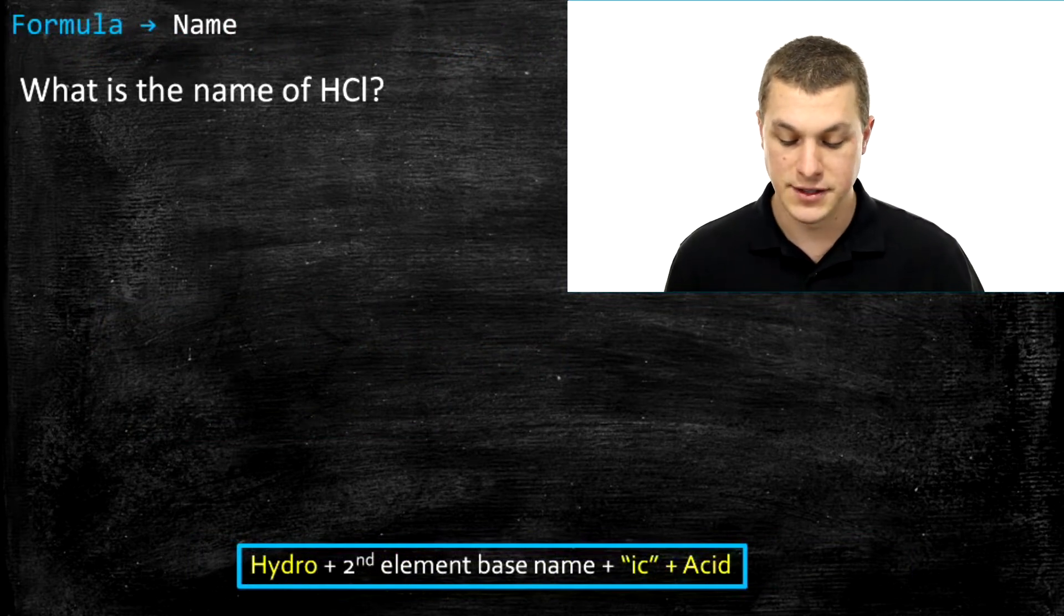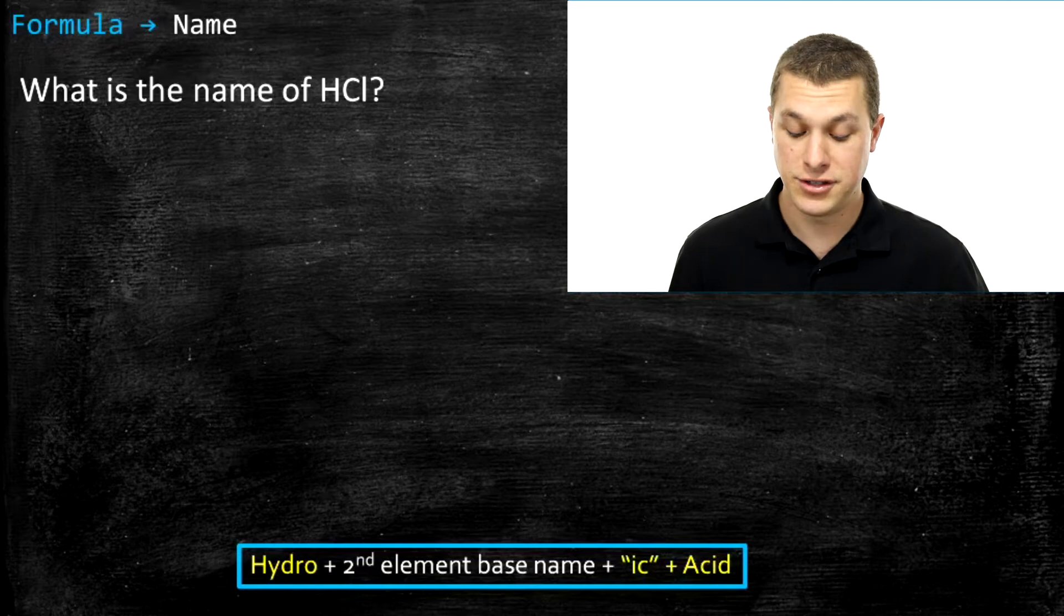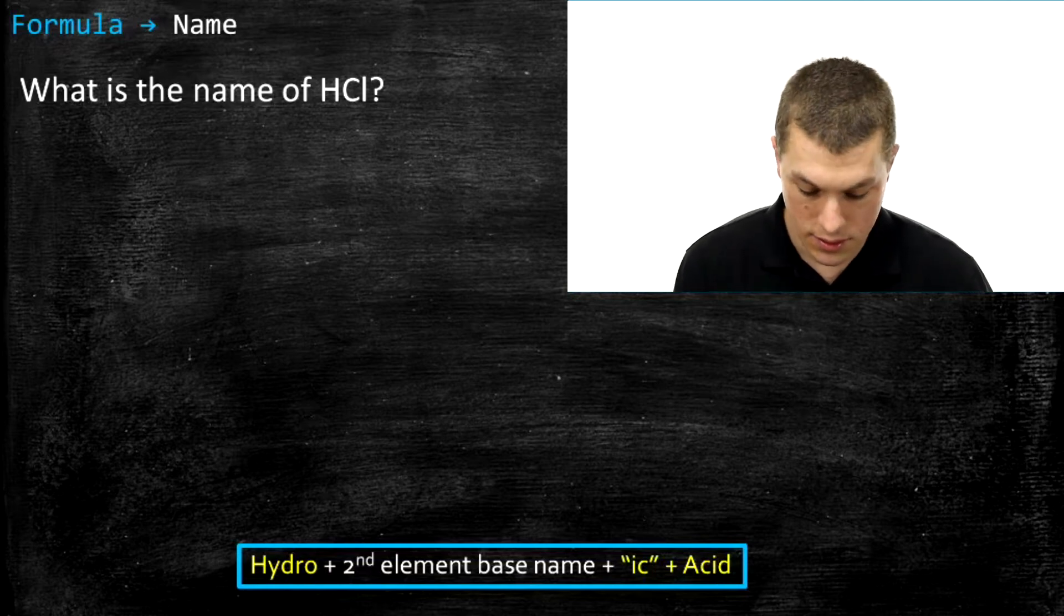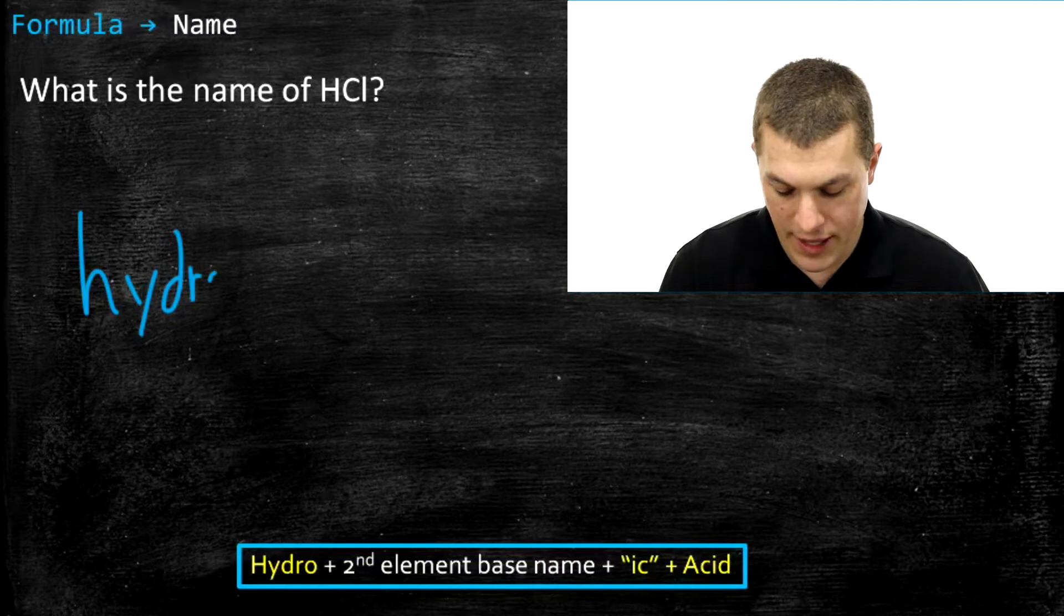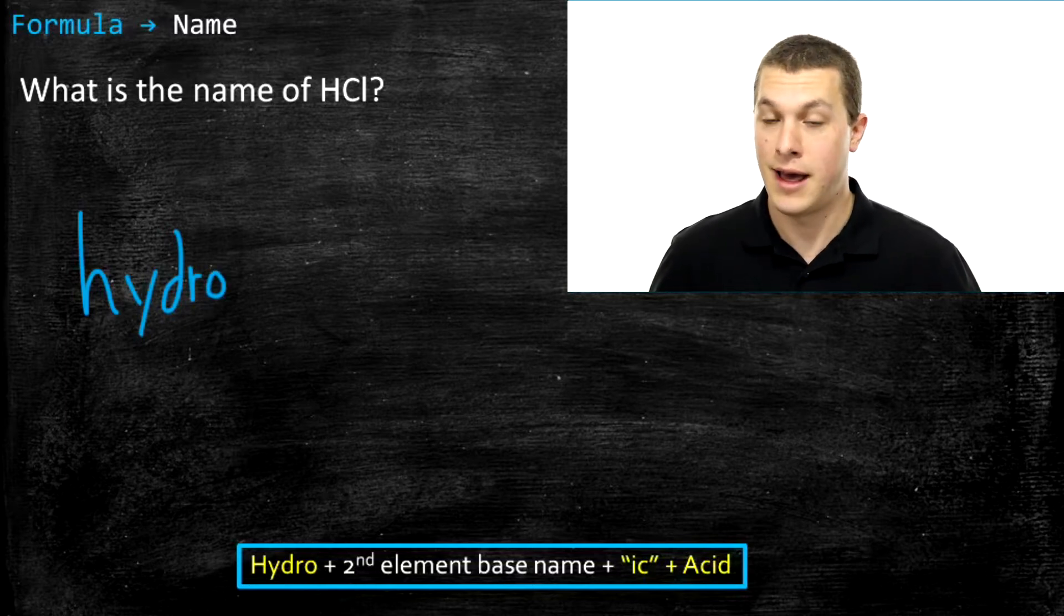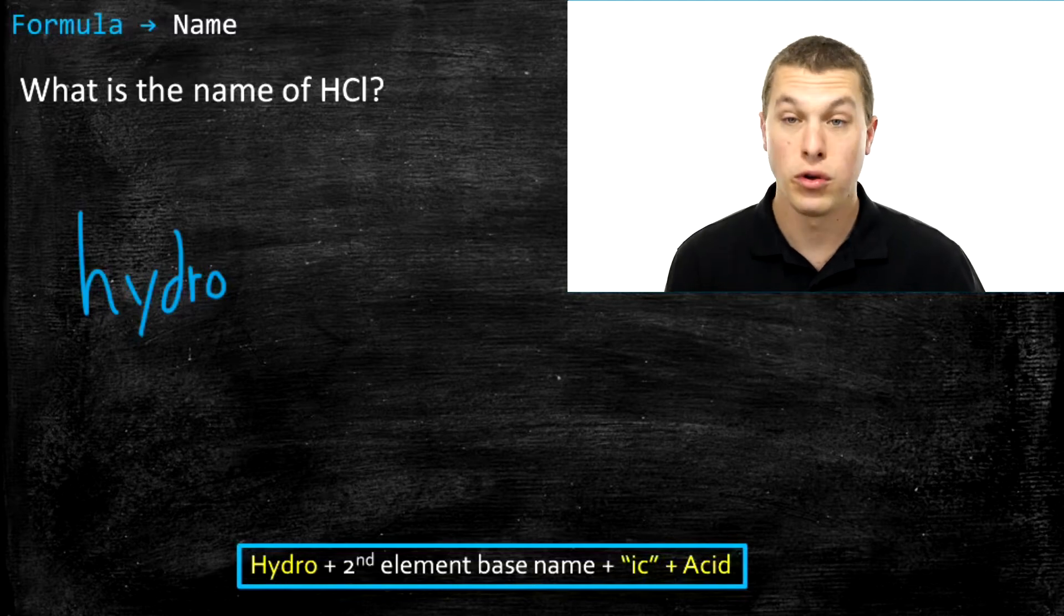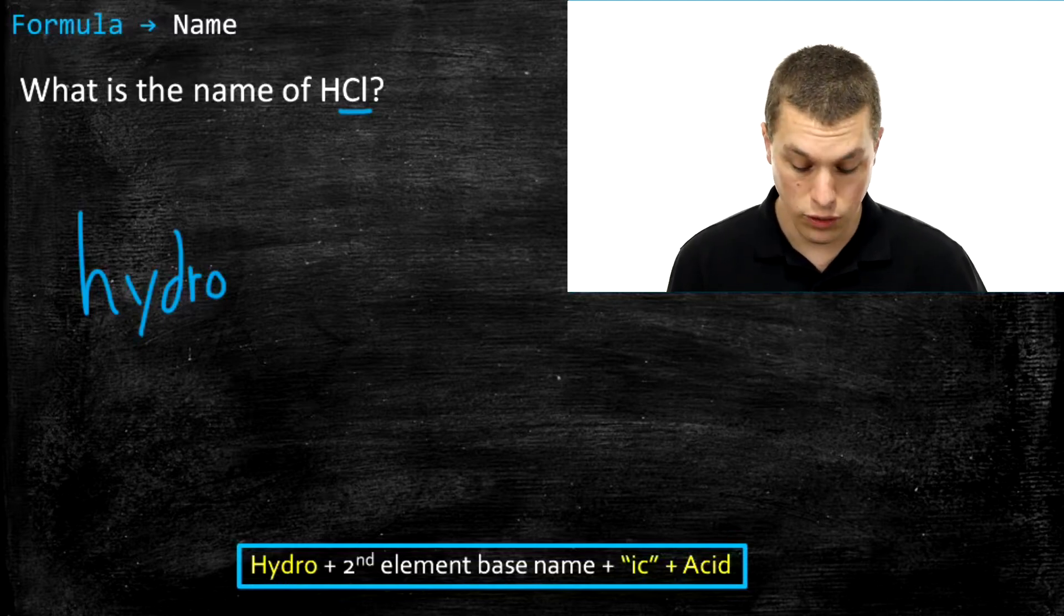And the way we name these binary acids is we always start with hydro. You can think of that taking the place of the H. So instead of writing hydrogen, we write hydro. And then what we write is the base name of the second element, or in other words, the base name of the thing that's not hydrogen. So in this case, we have chlorine as the thing that's not hydrogen. And the base name of chlorine is Chlor. And so we're just going to write Chlor.